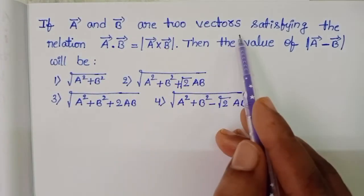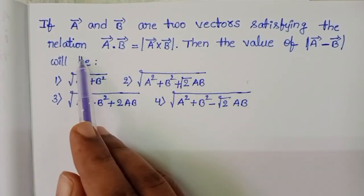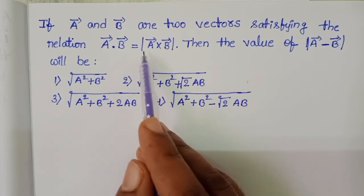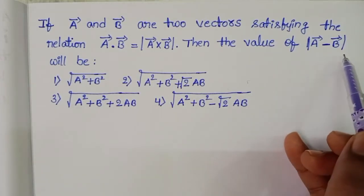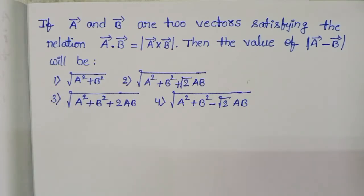If A bar and B bar are two vectors satisfying the relation A bar dot B bar equals mod A bar cross B bar, then the value of mod A bar minus B bar will be.